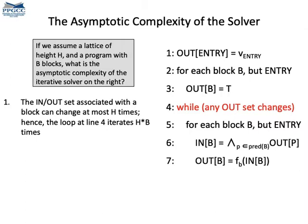After that, the inset will reach bottom, and then it cannot change anymore. The loop at line 5 iterates B times. I believe that's kind of obvious, is it?